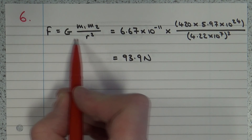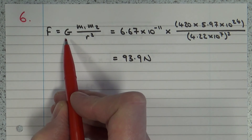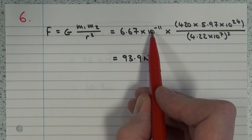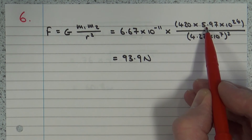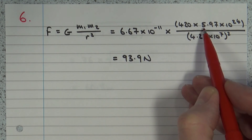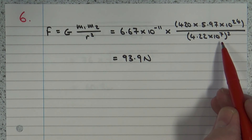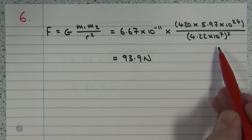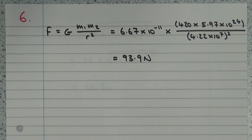For question number 6, we're using F = Gm₁m₂ / r². The value of G — 6.67 × 10⁻¹¹ — is found in the data sheets. The two masses can be assigned either way. The distance r is from the satellite to the centre of the Earth. Sometimes you need to add the planet's radius to the satellite's altitude. Remember to square r. We should end up with a force of 93.9 newtons.